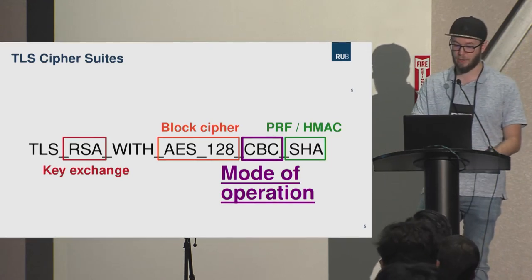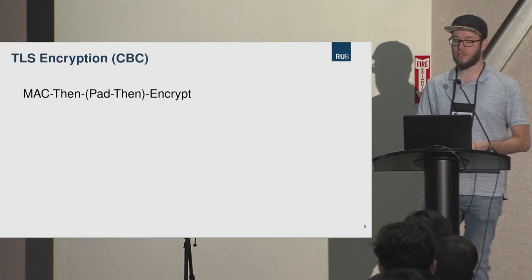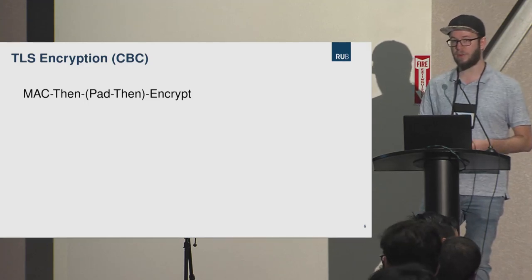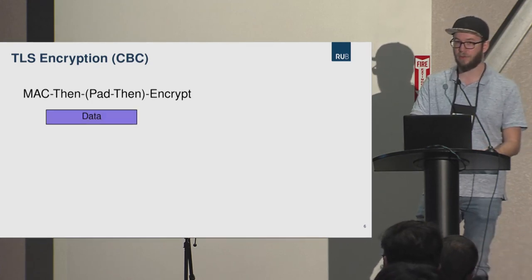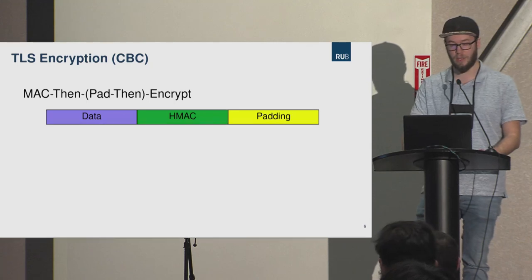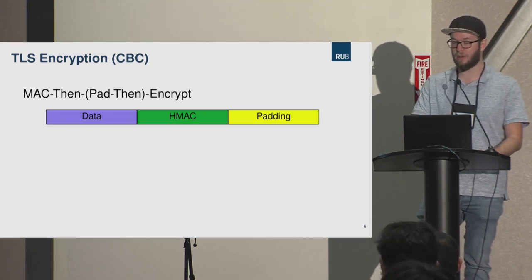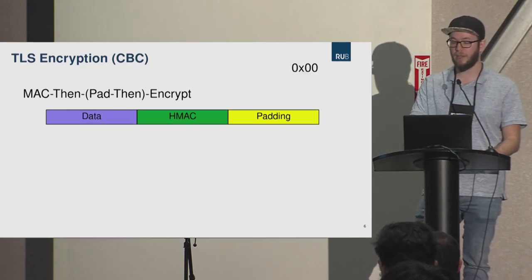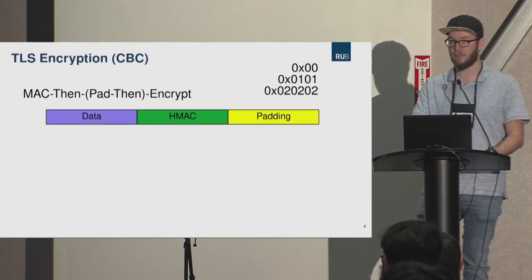TLS in CBC mode uses a concept of MAC-then-pad-then-encrypt. This means that if you have some data you want to encrypt, you first compute an HMAC, then fill the data with additional padding bytes. Depending on how long your padding is, it looks different. For example, one byte of padding is just a zero byte; two bytes of padding is two one-bytes; three bytes is three two-bytes, and so on — there's a structure in the padding.